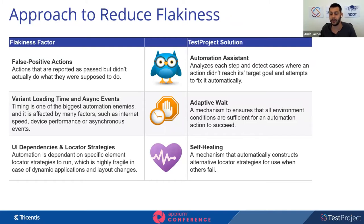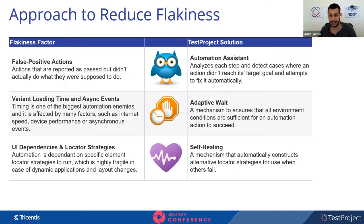At Test Project, we developed an approach to reduce flakiness by including three AI components. The Automation Assistant automatically detects false positive actions. The Adaptive Wait combats timing — one of the biggest automation enemies — by acting as a global setting that automatically waits the appropriate amount of time needed for any element to load, ensuring environment conditions are sufficient for the automation action to succeed.